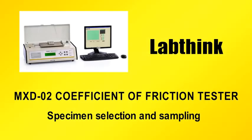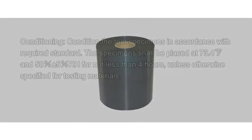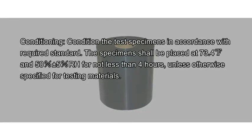Specimen Selection and Sampling. Conditioning: condition the test specimens in accordance with the required standard. The specimen shall be placed at 23±2°C (73.4±3.6°F) and 50±5% relative humidity for no less than 4 hours, unless otherwise specified for the testing materials.